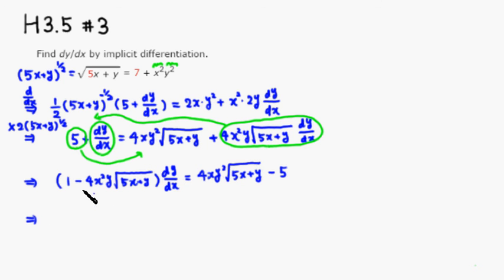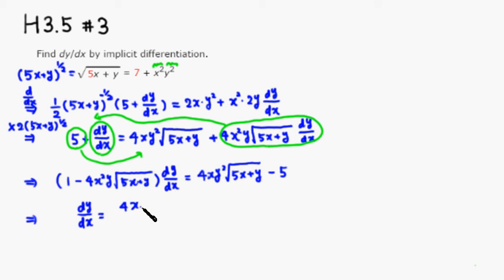The last step is to divide both sides by the factored quantity. So dy/dx equals 4xy²√(5x+y) minus 5, all over 1 minus 4x²y√(5x+y).